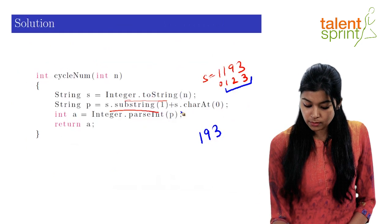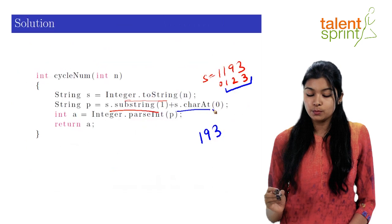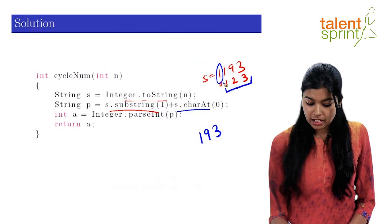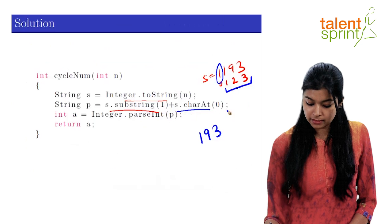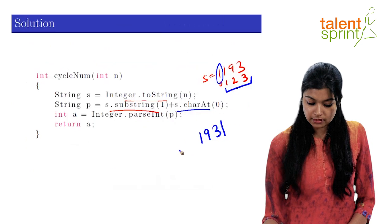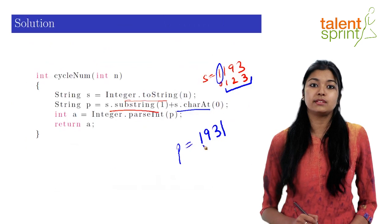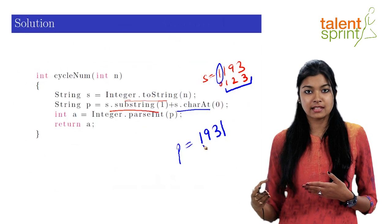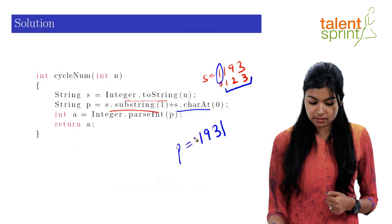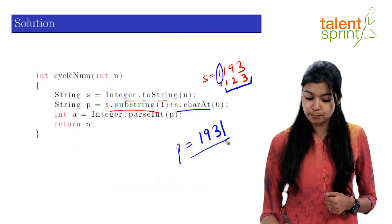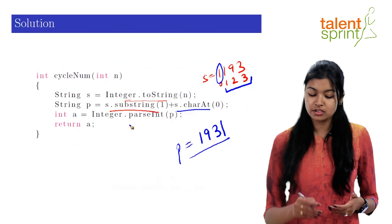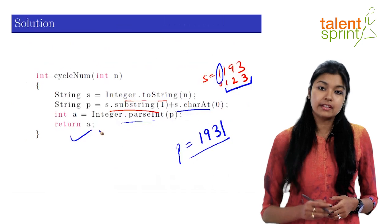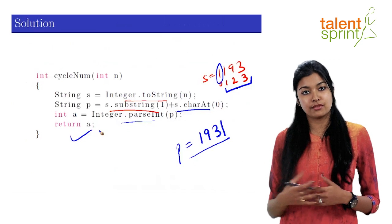Now, by doing s.charAt(0), we'll get the value at the index 0, which is 1. And we are adding it towards the end, which is here and storing this value in p. So this is essentially the next number for our next iteration. And we are converting this string p into an integer again by using this parseInt function and returning this variable a for our next iteration of the while loop.